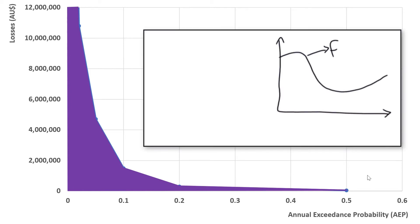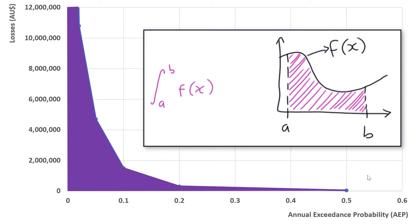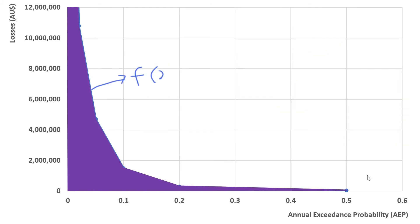The most accurate way of estimating the area under the curve is through integration, which is a mathematical method that can be used to find areas, volumes, centre points, and other things. For this, you need to have your calculus up to scratch and solve the integral in the equation shown here. The purpose of this course is not to get you up to scratch in calculus, so I'm not going to go into the detail on how to solve integral equations. I'll put a few resources in the description below the video. What I'll do instead in this course is show you two easy methods to roughly estimate average annual damage.